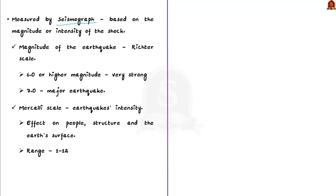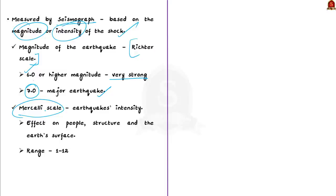Earthquakes are measured with a machine called a seismograph, generally based on the magnitude or intensity of the shock. Magnitude is measured on the Richter scale — an earthquake of 6 or higher is considered very strong, and 7.0 Richter is classified as a major earthquake. Intensity is measured using the Merkali scale, which expresses the earthquake's effect on people, structures and the earth's surface. The intensity scale ranges from 1 to 12.